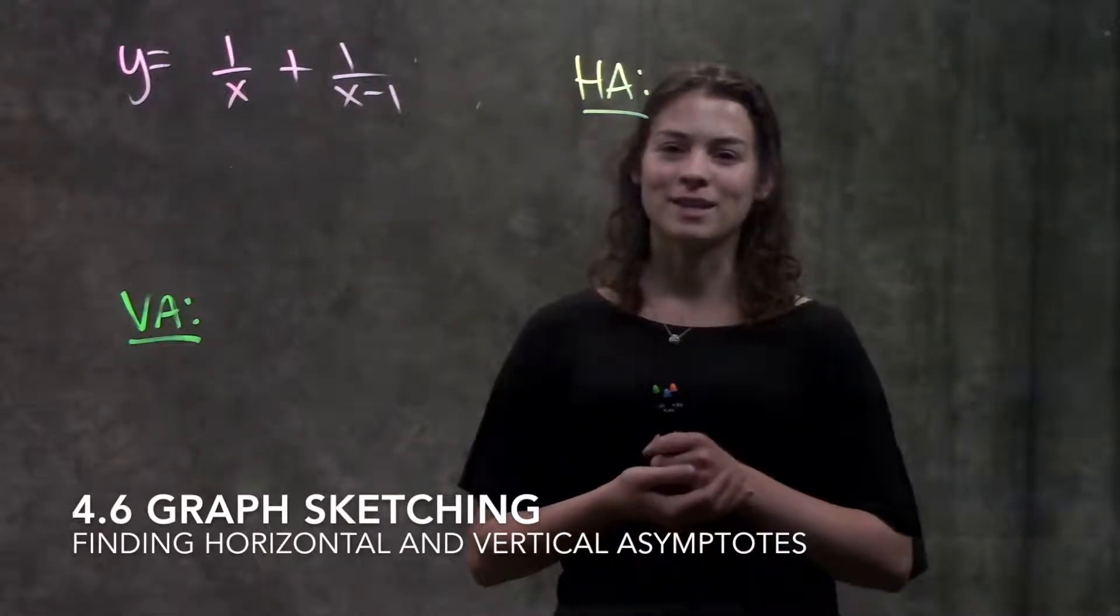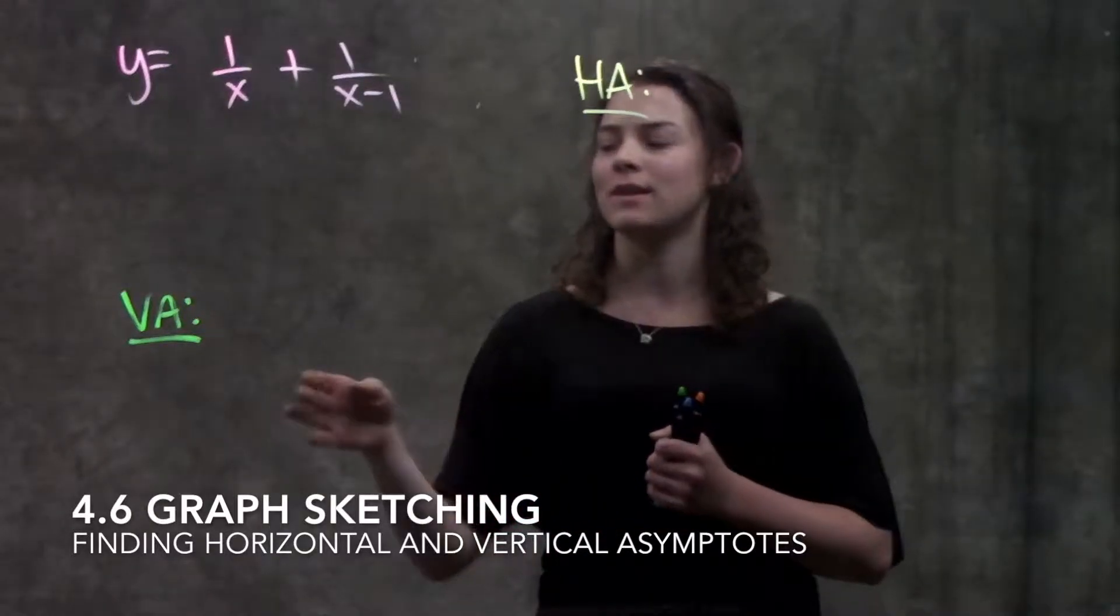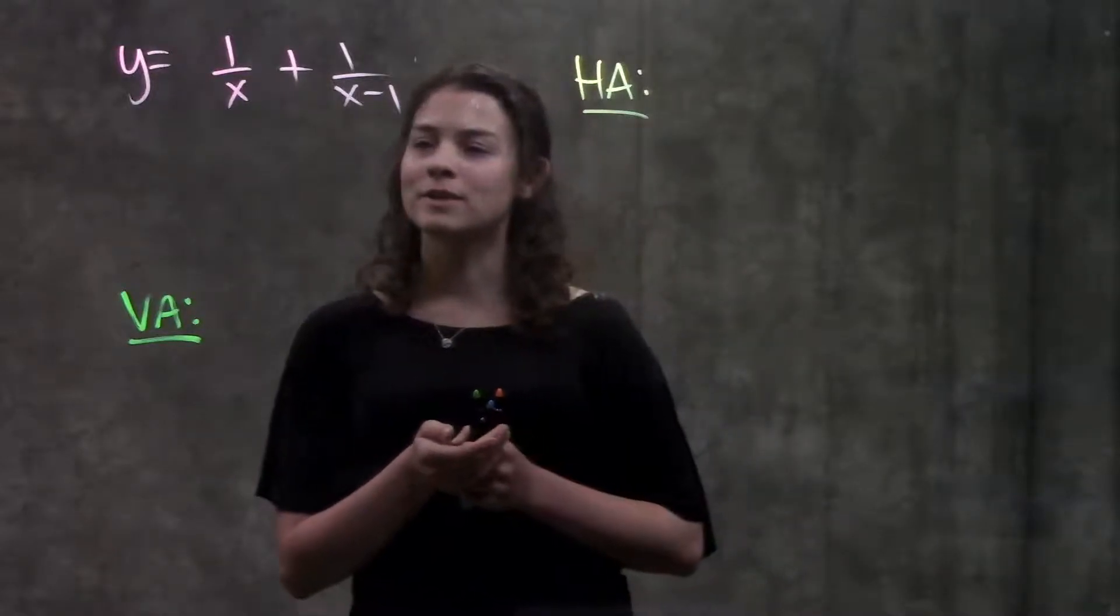This is section 4.6 graph sketching. In this video we're just going to review how to find asymptotes both horizontal and vertical. So let's go through this example. We have this function.